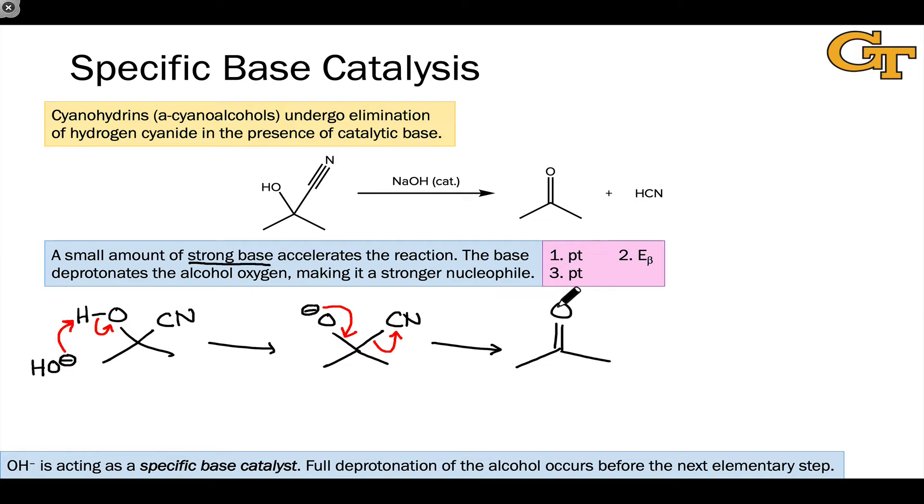This forms the carbonyl compound and also generates CN- and to turn over the cycle, regenerate the base catalyst and generate HCN, we have to do another proton transfer. We generated the conjugate acid of the specific base catalyst in the first step, and that engages with CN- in a proton transfer step to form HCN and generate OH- again, which can return to the start of the cycle and engage with another molecule of substrate.